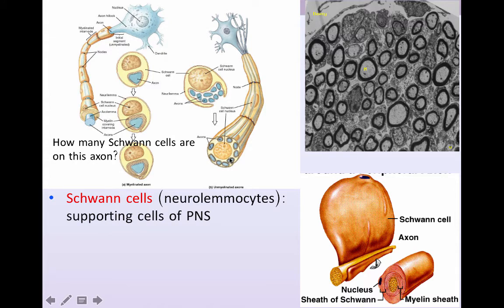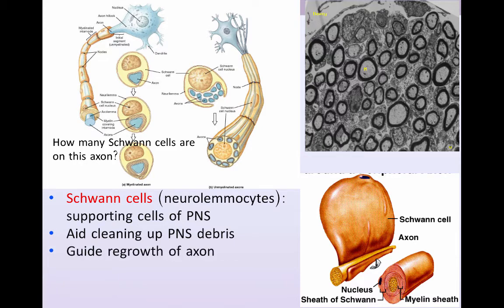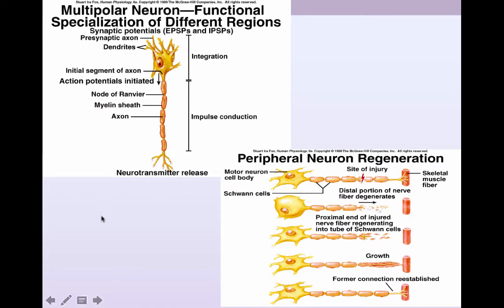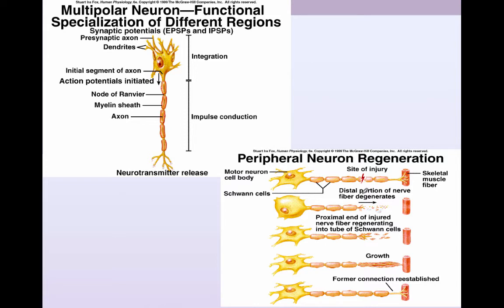The Schwann cell is known as a neurolemmocyte and is a supporting cell of the PNS. Schwann cells can help with cleaning up debris in the peripheral nervous system. They also help to re-guide the growth of damaged axons, so in the peripheral nervous system axons can regrow, directed by these Schwann cells. That's a key difference from the central nervous system, where axons cannot regrow.